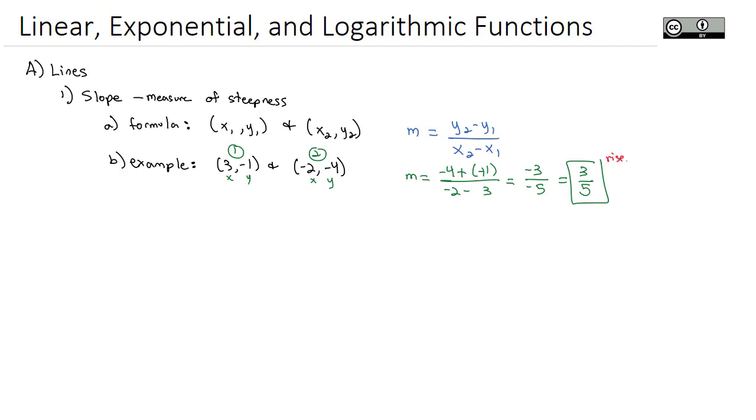You might remember we would call the numerator the rise and the denominator the run, indicating that this line rises 3 for every 5 that it runs. Once we knew how to calculate the slope, or the measure of steepness of the line, we started coming up with the equation that represented the line. And the most common way we represented that equation is what is called the slope-intercept equation. The formula for the slope-intercept equation was y equals mx plus b, where m represents the slope, and b represents the y-intercept, which is found when the x-coordinate is 0.